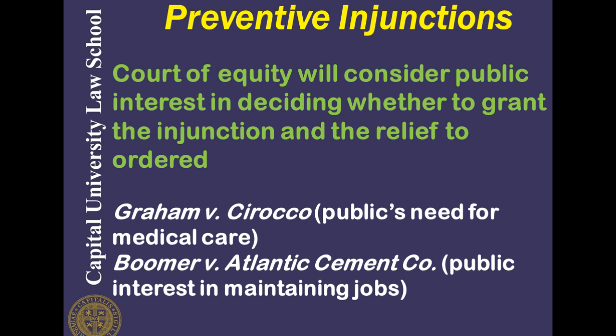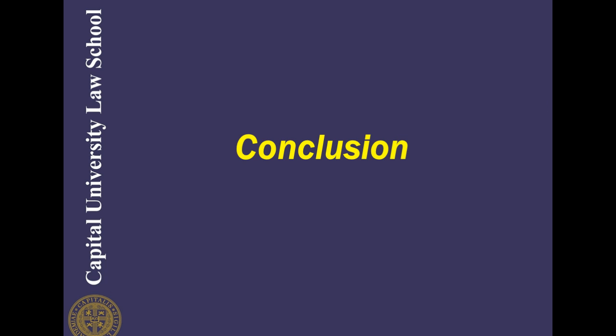The equitable nature of injunctions dictates all four elements: that there not be an adequate remedy at law, that the plaintiff suffer irreparable harm, that the court balance the interests of both plaintiff and defendant, and that the court consider the public interest in deciding whether to grant the injunction. All four of these, in addition to the merits of the injunction itself, must be reviewed by the court and advocated pro or con by the parties. This concludes lecture number seven — remember to go to the assessment section on the TWIN page and fill out the video lecture assessment for video lecture number seven.